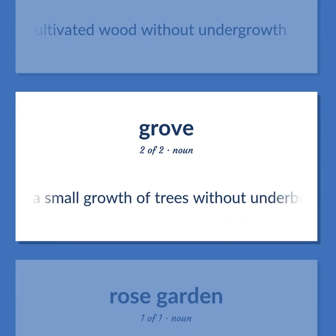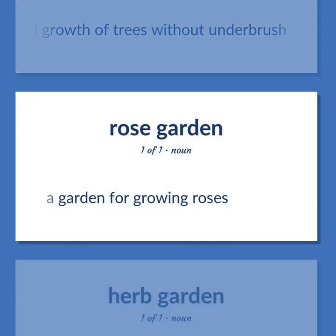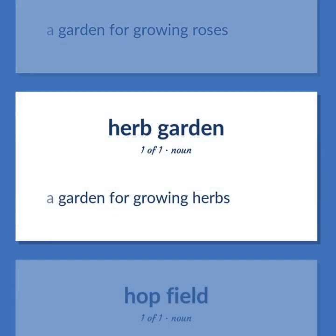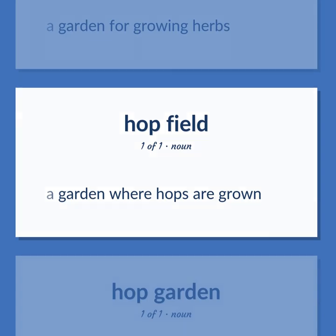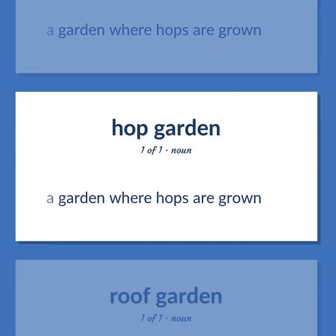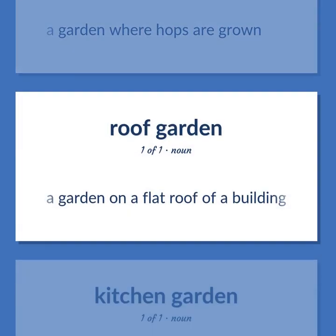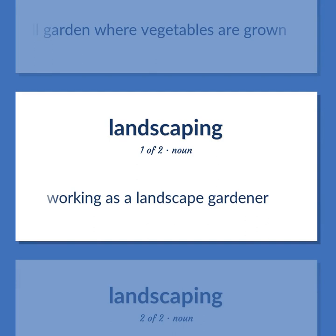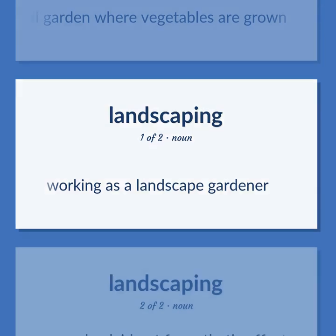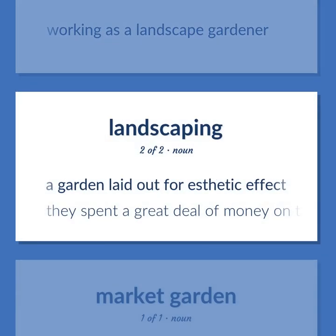Garden consisting of a small cultivated wood without undergrowth — a small growth of trees without underbrush. A garden for growing roses. A garden for growing herbs. A garden where hops are grown. A garden on a flat roof of a building. A small garden where vegetables are grown. Working as a landscape gardener.